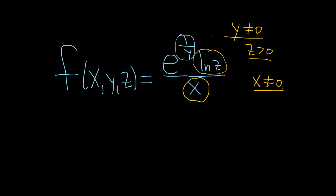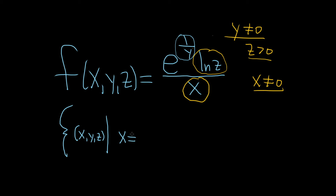Those are our three restrictions. The next step is to write the answer correctly — it's really important to use the correct notation. So it's a set, and we tend to use curly braces. The inputs are ordered triples, so we write (x, y, z), then 'such that' the following conditions are satisfied: x ≠ 0, y ≠ 0, and z is positive.